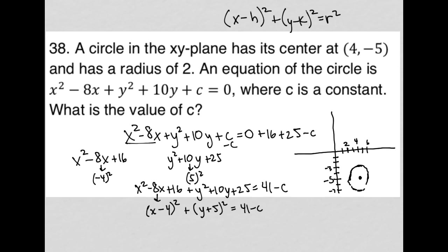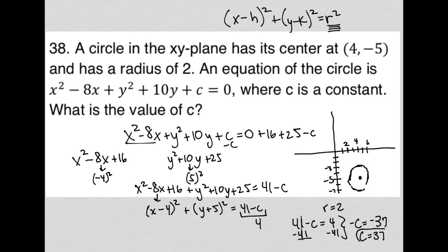Here's the benefit: the question told me the radius equals 2. So if r = 2, the right-hand side should be 4, because that value should be r². So I'm solving 41 - c = 4. Subtracting 41 from both sides, I get -c = -37, so positive c equals positive 37. That is our correct answer — the value of c is 37.